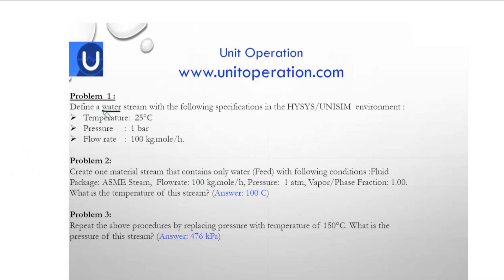The first problem is to define a water stream. This water stream is at 25 degrees Celsius, pressure is one bar, and the flow rate is 100 kilomoles per hour. Let's go to the simulation software and see how we do it.